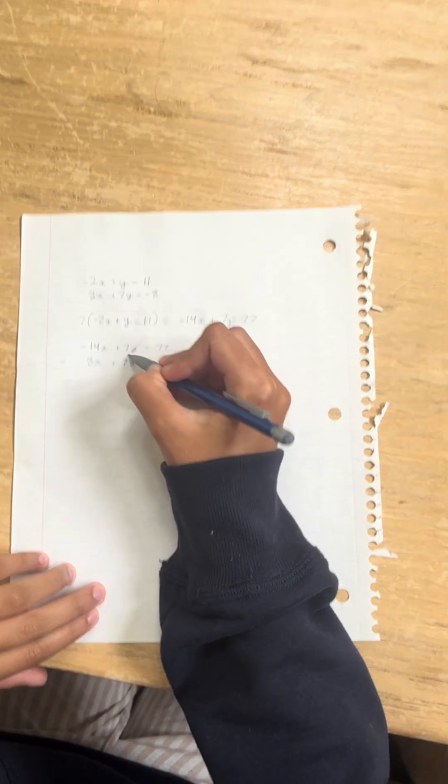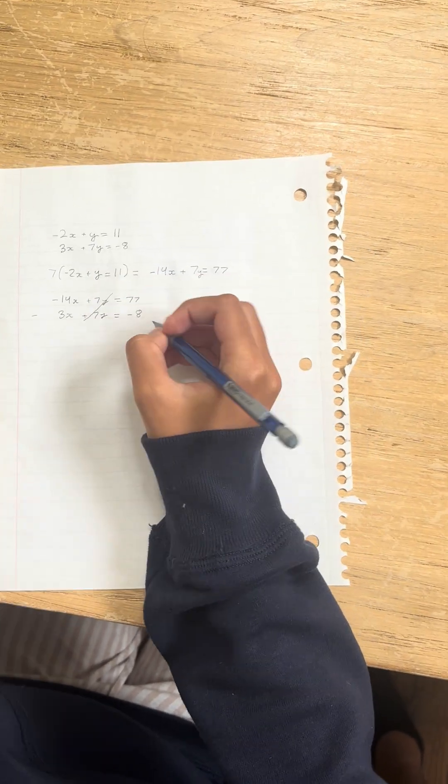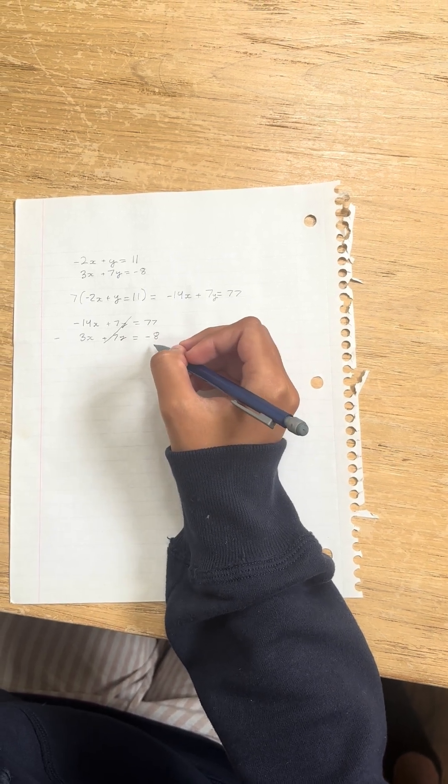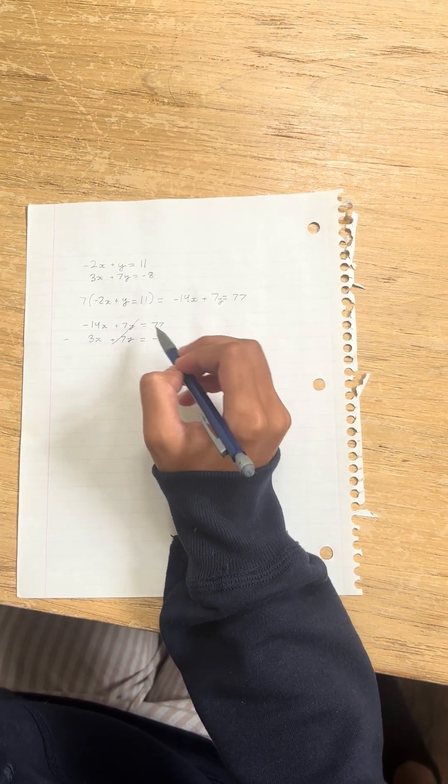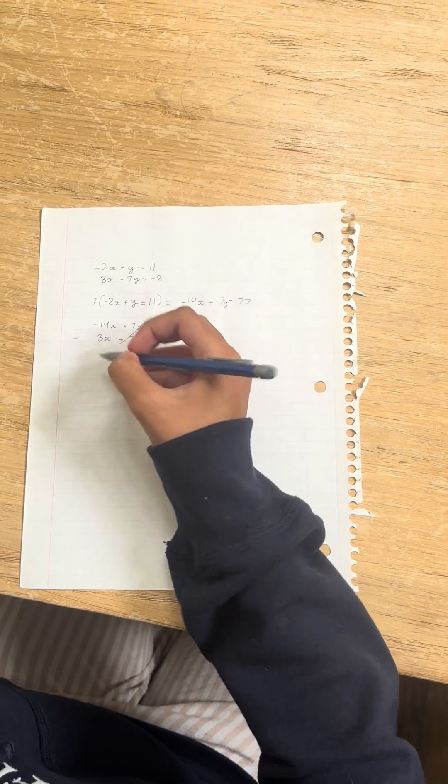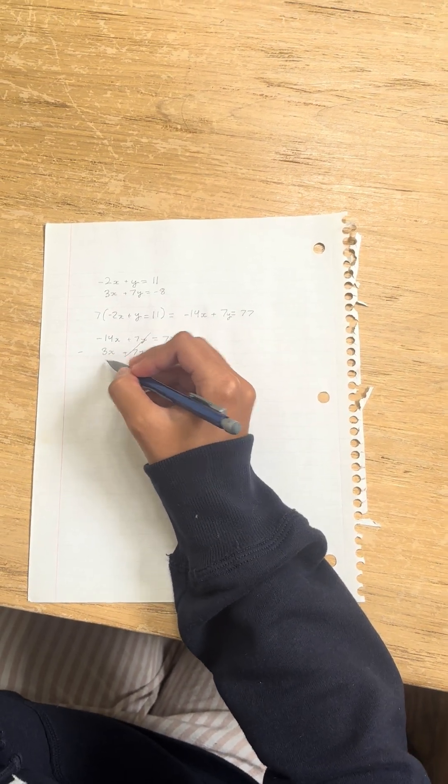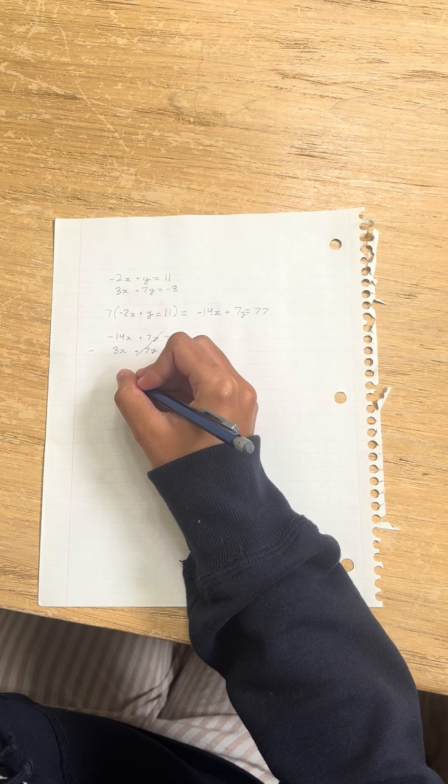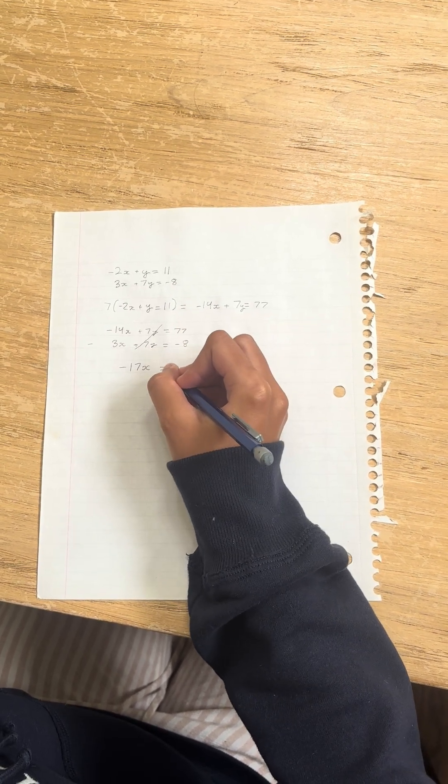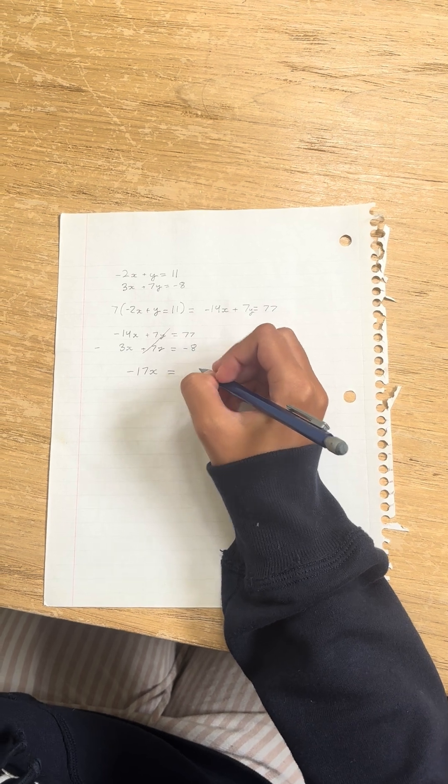And now we can cancel out these equations. And we can just do minus 14x minus 3x and 77 plus 8, because minus and minus cancel each other and they just become a plus. So minus 14x minus 3x is minus 17x. And then 77 plus 8 becomes 85.